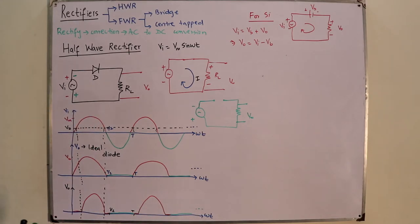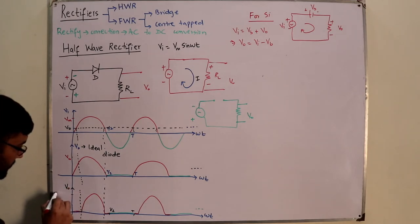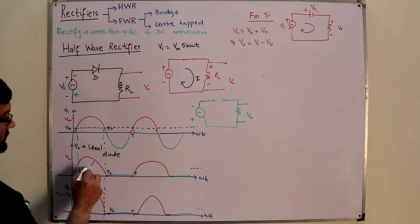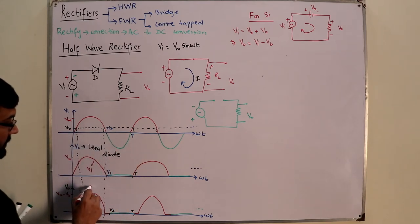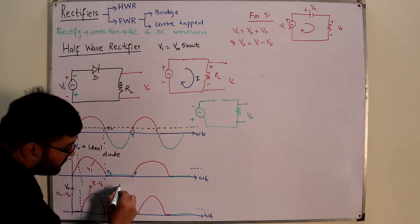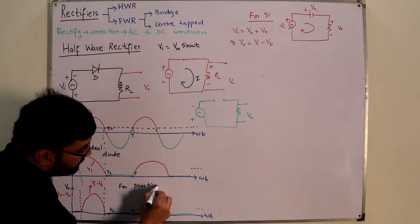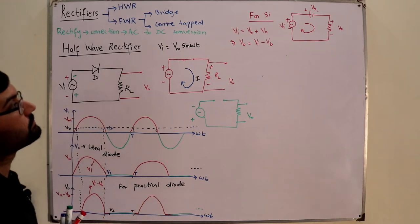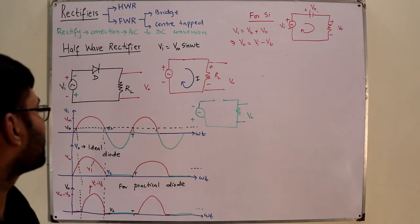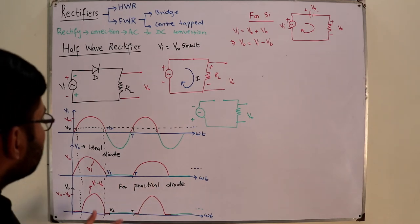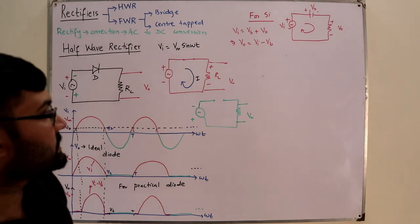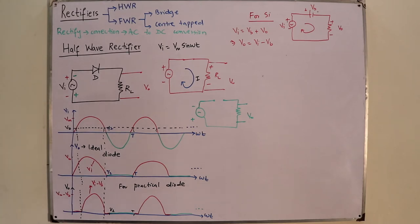The peak of the output for a practical diode is V_m − V_B instead of V_m. For the ideal diode the input was copied directly; for the practical diode the output is V_input − V_B. In the reverse bias state the output voltage remains zero. You can also draw the graph of voltage across the diode: in the forward bias ideal case there is zero voltage drop across it; in the reverse bias state it equals V_input.